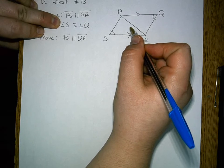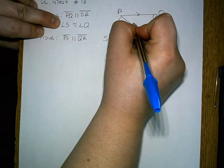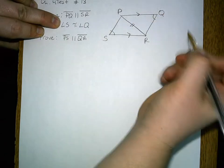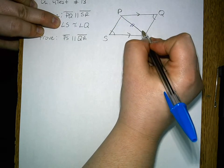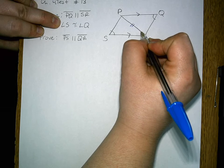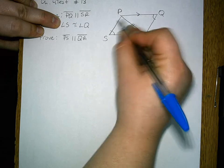Also any other additional information that you can prove from the given. So here we can prove that PR is congruent to itself by reflexive property. And since SR is parallel to PQ,